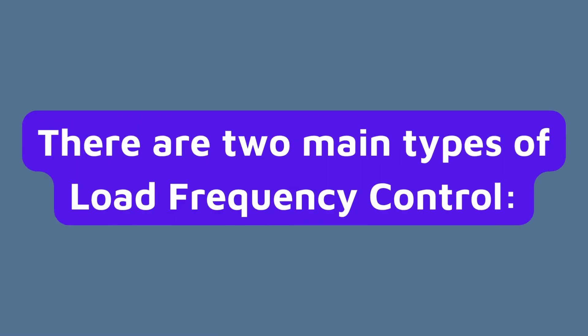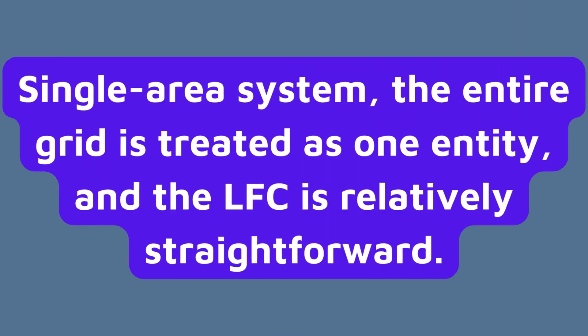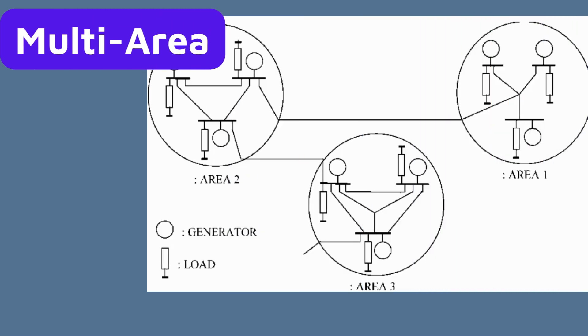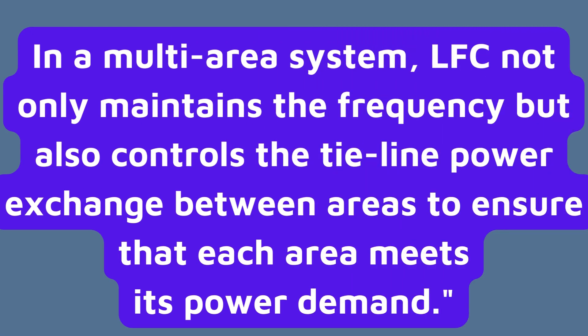There are two main types of load frequency control: single area and multi-area. In a single area system, the entire grid is treated as one entity, and the LFC is relatively straightforward. However, in a multi-area system, which is more common in interconnected power grids, LFC must consider the frequency and power interchange between different areas. In a multi-area system, LFC not only maintains the frequency, but also controls the tie-line power exchange between areas to ensure that each area meets its power demand.